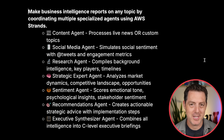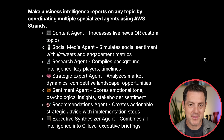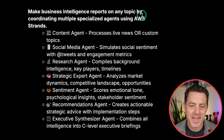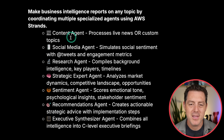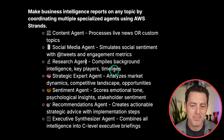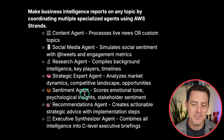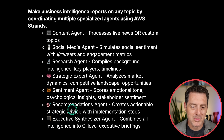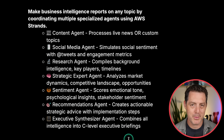Now let's get into the more sophisticated project. We used ChatGPT to help come up with the team of agents. The project is: make business intelligence reports on any topic by coordinating multiple specialized agents using Strands. We're going to have a content agent responsible for processing live news, a social media agent simulating social sentiment, a research agent compiling background intelligence and key players, a strategic expert agent analyzing market dynamics and competitive landscapes, a sentiment agent scoring emotional tone and psychological insights, a recommendations agent creating actionable strategic advice, and an executive synthesizer agent combining all of it into a presentable executive report.